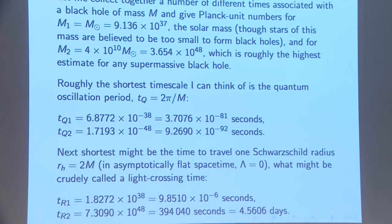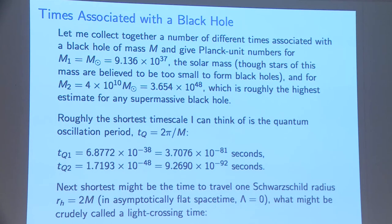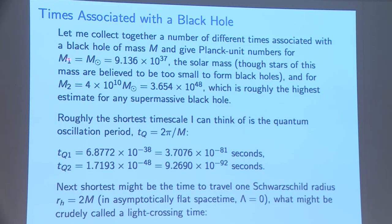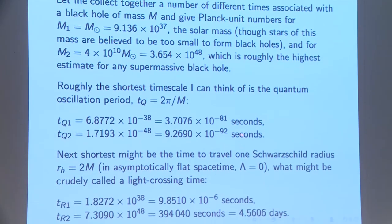Let me collect the time scales for two masses: a solar mass (convenient though astrophysically too small to form a black hole) and the highest estimated supermassive black hole of 40 billion solar masses. The shortest time scale is the quantum oscillation period, 2π over the mass in Planck units — that many seconds for a solar mass, very short for 40 billion solar masses. Next is the light crossing time of the Schwarzschild radius: about 10 to the minus 5 seconds for a solar mass, and about four and a half days for the supermassive black hole.